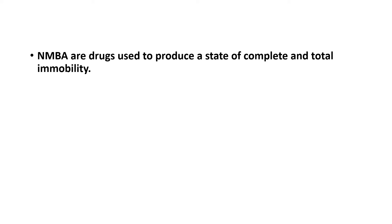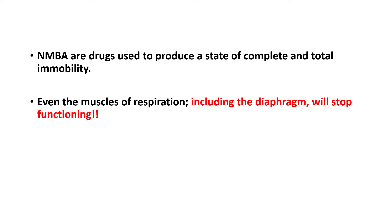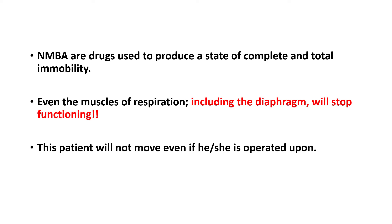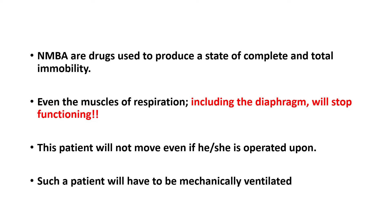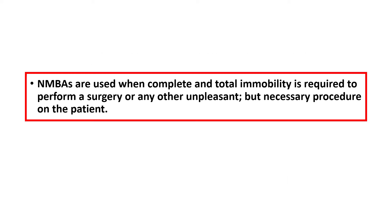So neuromuscular blocking agents are not used for the usual aches and pains or for spasticity or such conditions. These are drugs which are used to produce a state of complete and total immobility. Even the muscles of respiration including the diaphragm will stop functioning. The patient will not move even if operated upon, and such a patient would have to be mechanically ventilated. Thus neuromuscular blocking agents are used when complete and total immobility is required to perform a surgery or any other unpleasant but necessary procedure on the patient.